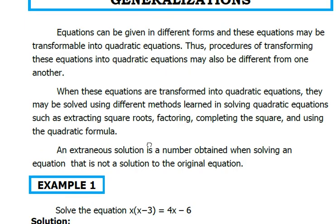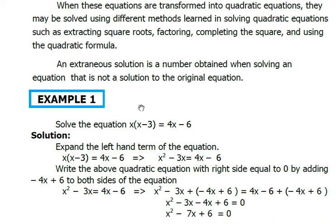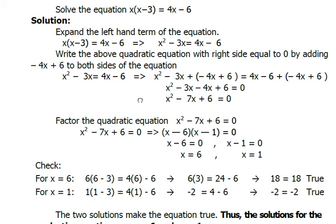Starting with the generalizations, we have to take note that an extraneous solution is a number obtained when solving an equation that is not a solution to the original equation. That means there might be some values of x that appear to be a solution, but when verified, they are not.